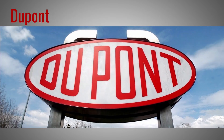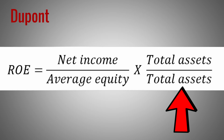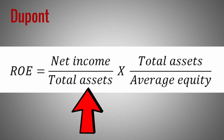The name comes from the international chemical company DuPont that introduced this analysis already a hundred years ago. The underlying idea is that we can expand the return-on-equity formula with balance sheet and income statement items that are helpful for the analysis. The arithmetic operation is simple: we take the return-on-equity fraction and multiply it with another fraction — in our case, total assets over total assets. Since numerator and denominator are equal, this boils down to multiplying with 1.